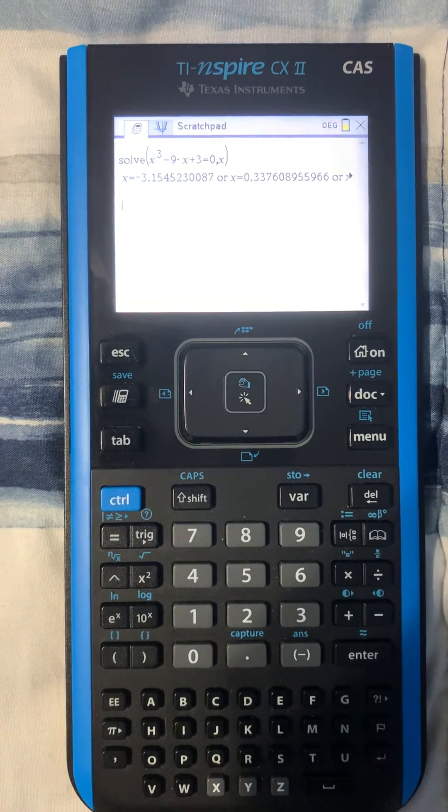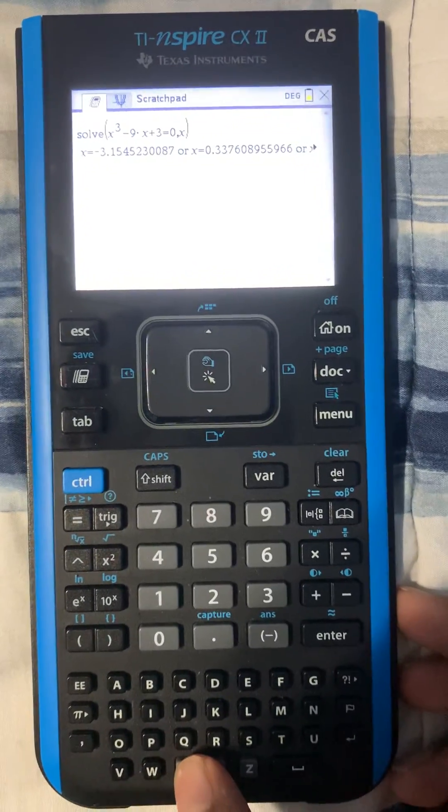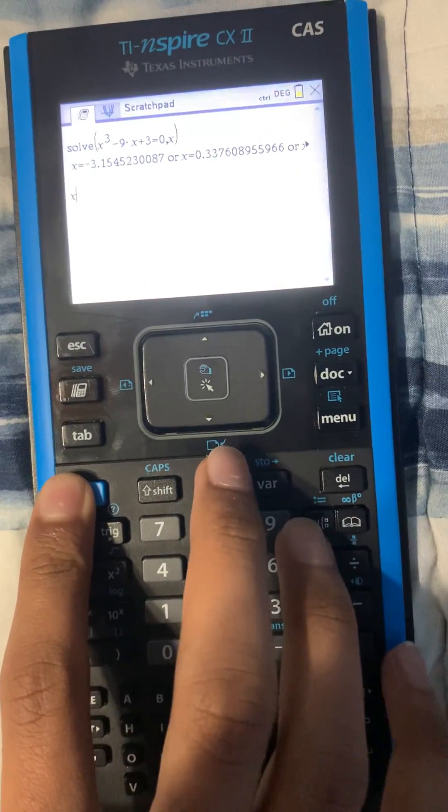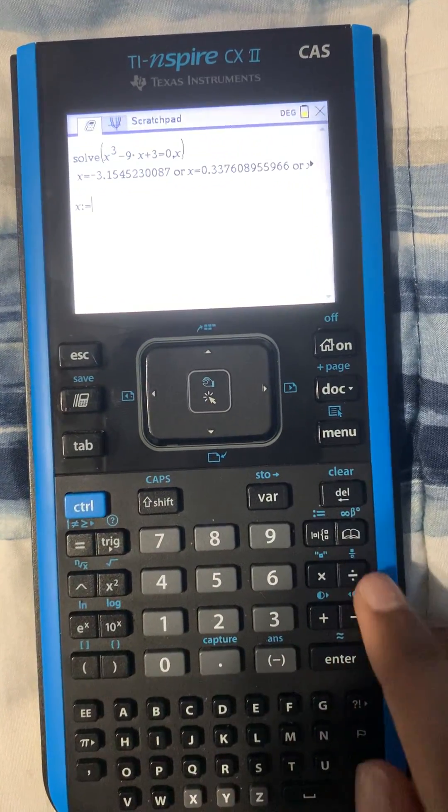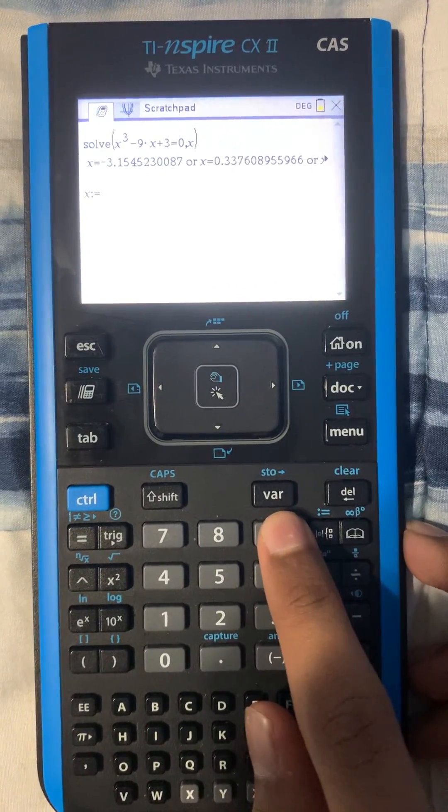Defining variables is another simple task. You'll press the variable that you want to define, and then this is important: press Control and this button over here, it's right under Delete. And you'll press the number that you want to define it as.